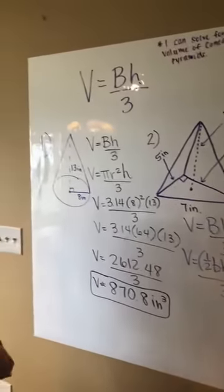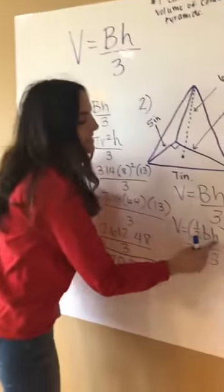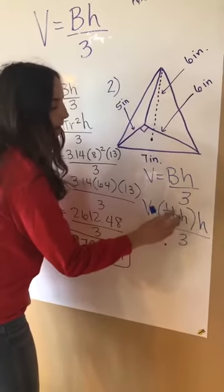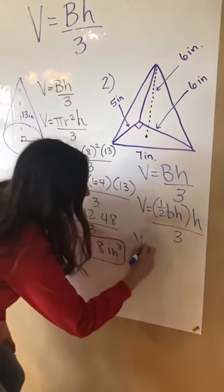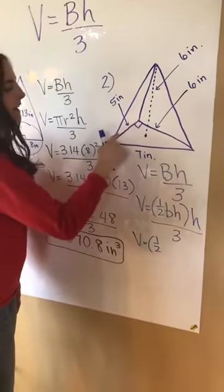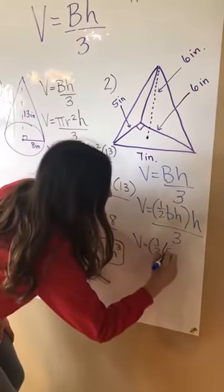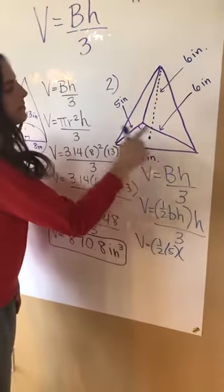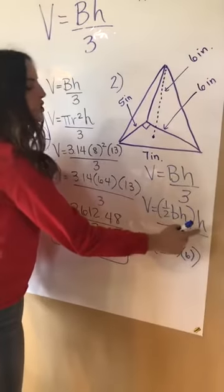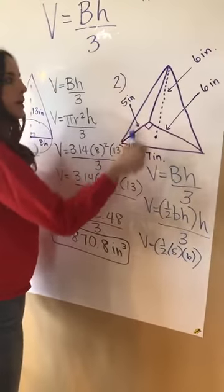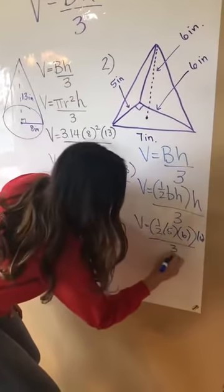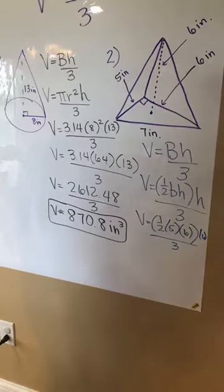And now we're going to substitute what we're given. Remember in here is the base area. So all these variables in here are coming from the base. So that's going to be one half base of the base is 5. Height of the base is 6. And this second H is height of the entire pyramid, which is also 6. And then divided by 3.